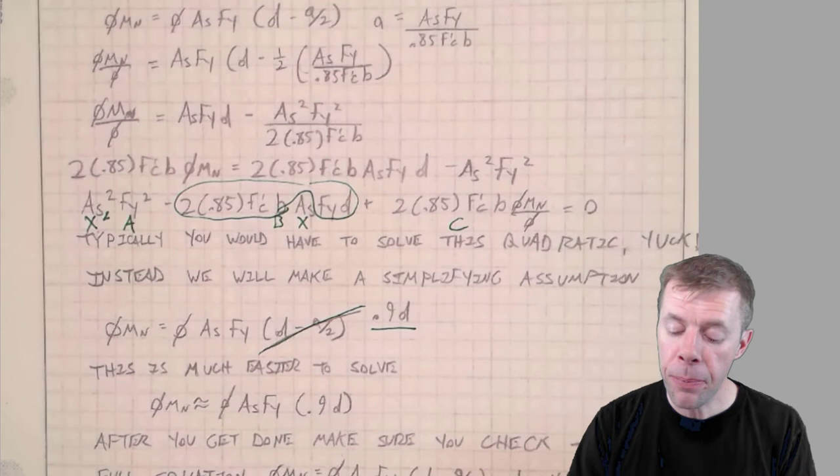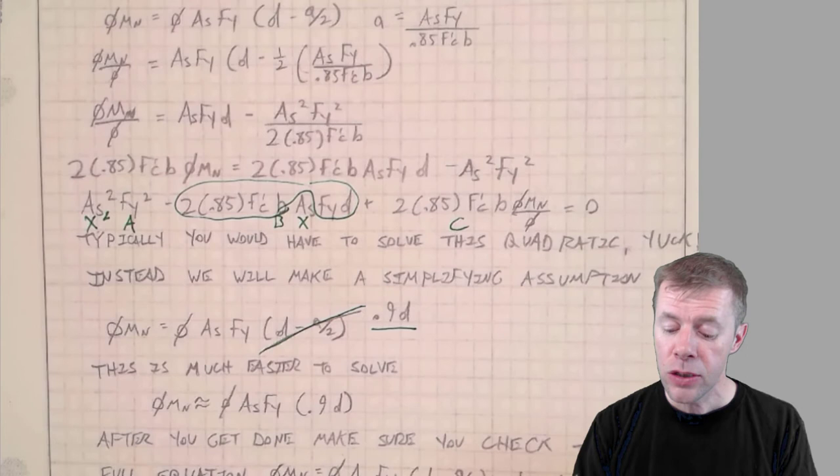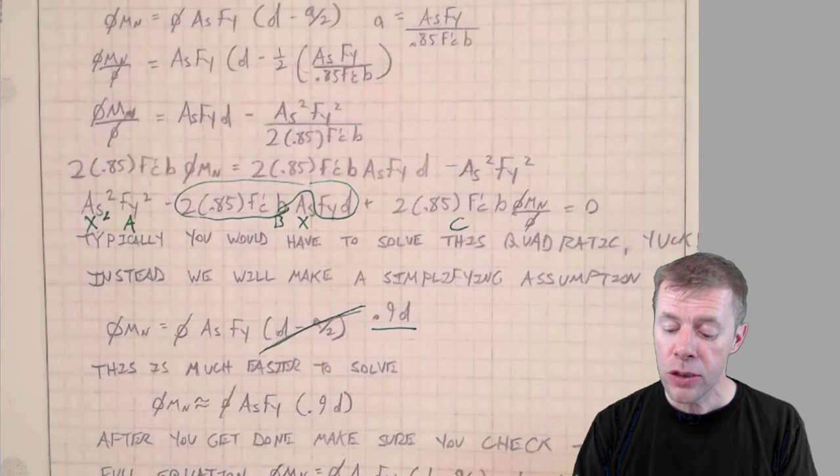And we're going to assume that this part is equal to just 0.9d. You're like, whoa, how'd you know? Well, if you do these problems a lot, people started to realize that this term was pretty close to 0.9d. Not always, but the majority of the time it's pretty close to 0.9d. So why not go ahead and assume that? Because if we did, this equation now becomes super easy.